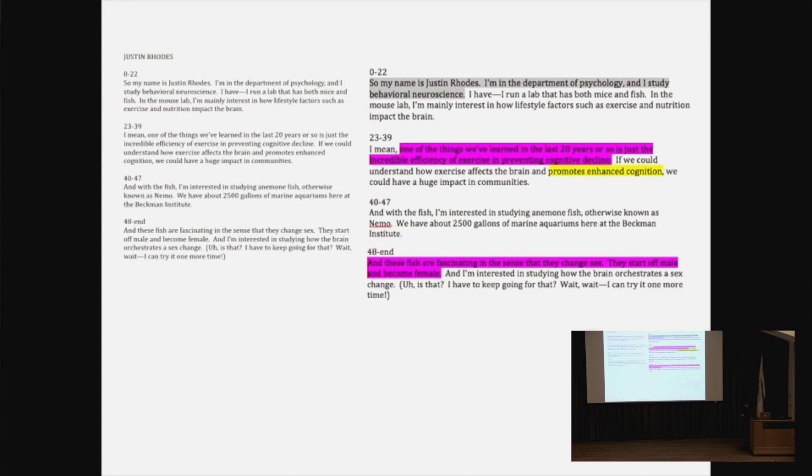Second 23 is 'the incredible efficiency of exercise in preventing cognitive decline.' That's huge, that's huge! An audience is like, what? Anything that connects to health and people is really big. That if you exercise, you're going to keep your brain going—that's actually a huge deal. Then at 48 out of 60 seconds: 'These fish are fascinating in the sense that they change sex.' What? Clownfish change sex? Twitter viral!